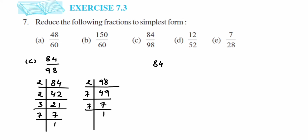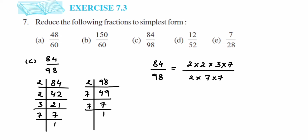Write it down: 84/98 equals 84 written as 2 × 2 × 3 × 7, and 98 written as 2 × 7 × 7. Now cancel the common factors: cancel one 2 and one 7. Left over in the numerator is 2 × 3 = 6, and in the denominator we get 7. So the simplest form of 84/98 is 6/7.